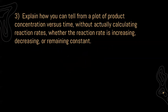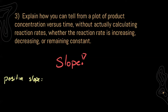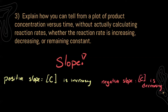For three, it says explain how you can tell from a plot of product concentration versus time, without actually calculating reaction rates, whether the reaction rate is increasing, decreasing, or remaining constant. Our best indicator is our slope. When we plot our graphs we see curves, and while taking the slope of a curve might take calculus, we can take the slope of a tangent line — a line that touches our curve at just one point. A positive slope means concentration is increasing, a negative slope means it's decreasing, and a slope of zero means concentration is staying constant.